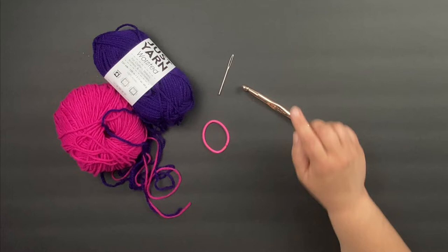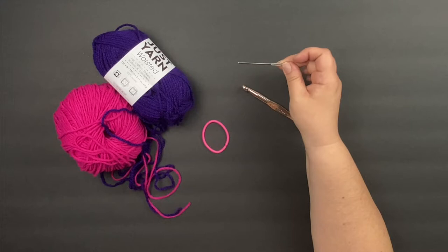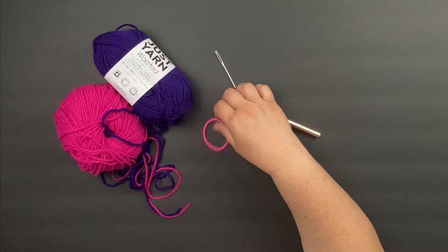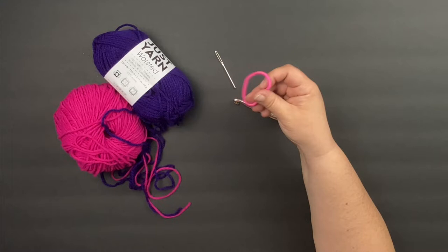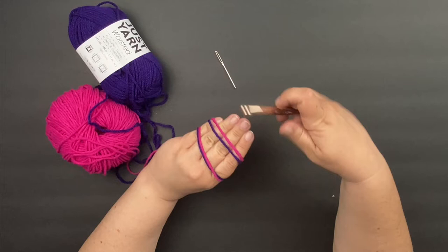Then we'll also need a darning needle. I like using one with a large eye to get the yarn through there. Then we'll need a hair tie. I just pick a pack of these up at the Dollar Tree and I use them for a couple projects. Don't forget scissors, we'll need those at the end.